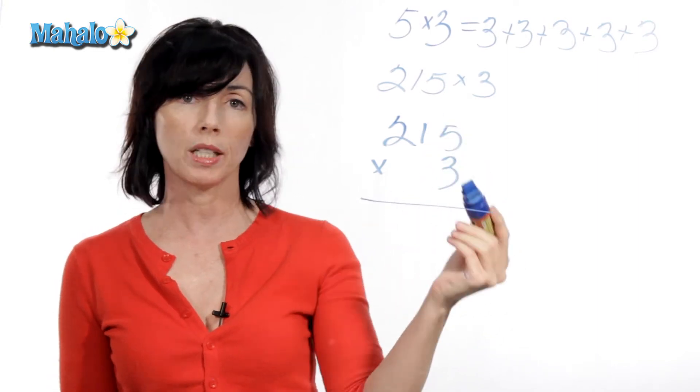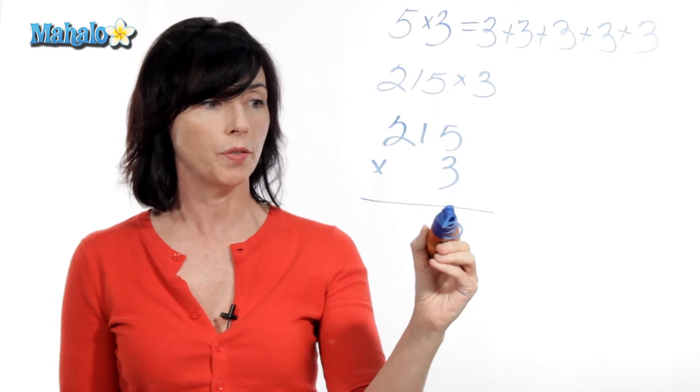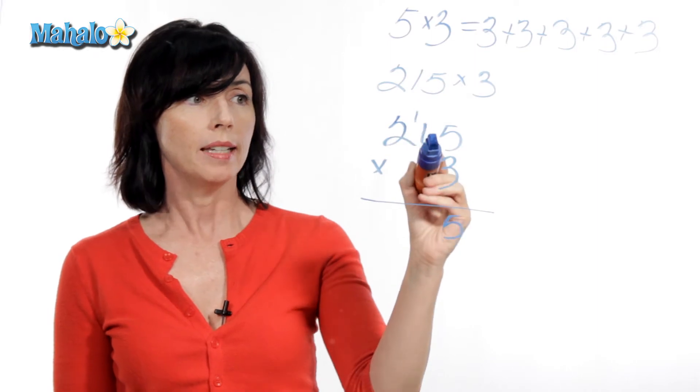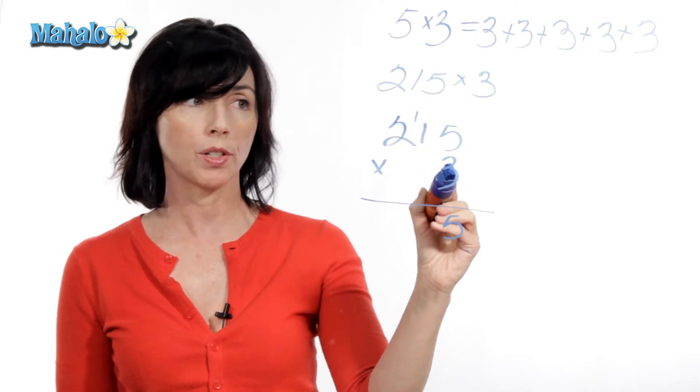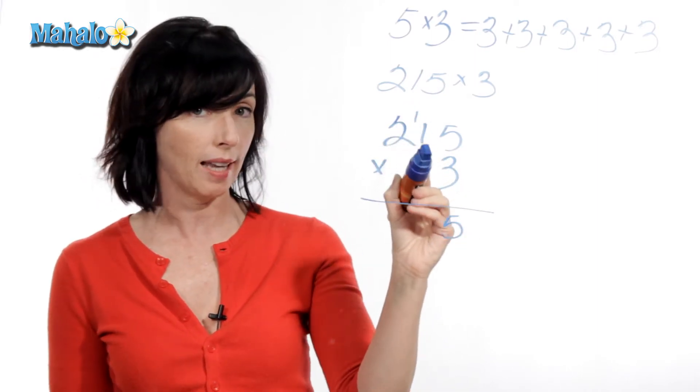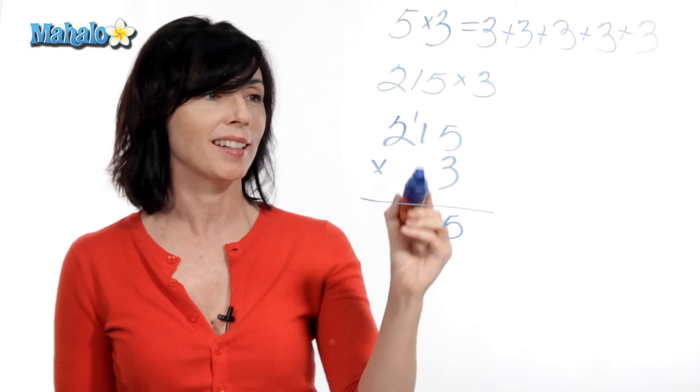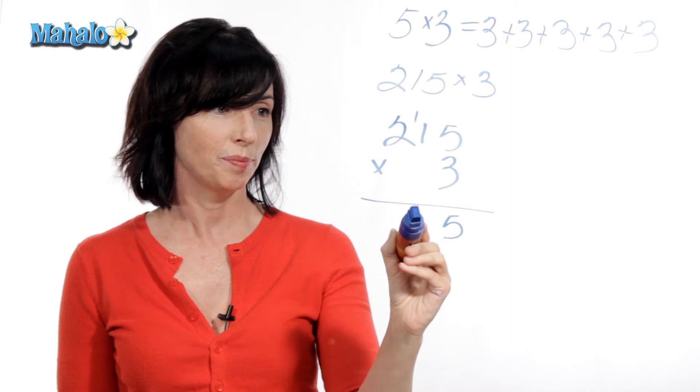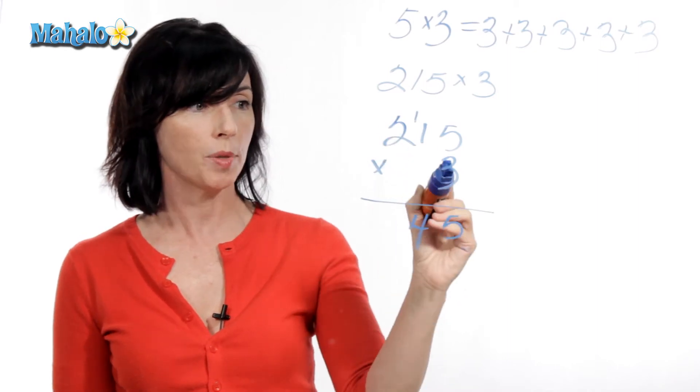Five times three is 15. So I put the five of my 15 down here, and I carry the one over to this column. Now, one times three is three, and then I'm gonna add the one I carried. Not multiply, but add. One times three is three, plus one is four, and two times three is six.